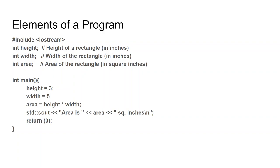Elements of a program: at the top we have include — we're including some libraries of code we're going to call later. We're declaring some variables at the top. In C++, we have one function called main. It returns a value of int — so int main means the main function is returning a value of int. You can consider the function to be of a type. This is our first introduction to data types.